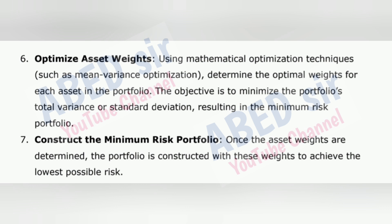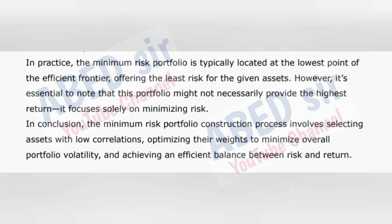Step 6: Optimize asset weights — using mathematical optimization techniques such as mean-variance optimization, determine the optimal weights for each asset in the portfolio. The objective is to minimize the portfolio's total variance or standard deviation, resulting in the minimum risk portfolio. Step 7: Construct the minimum risk portfolio — once the asset weights are determined, the portfolio is constructed with these weights to achieve the lowest possible risk. In practice, the minimum risk portfolio is typically located at the lowest point of the efficient frontier, offering the least risk for the given assets. However, this portfolio might not necessarily provide the highest return — it focuses solely on minimizing risk.